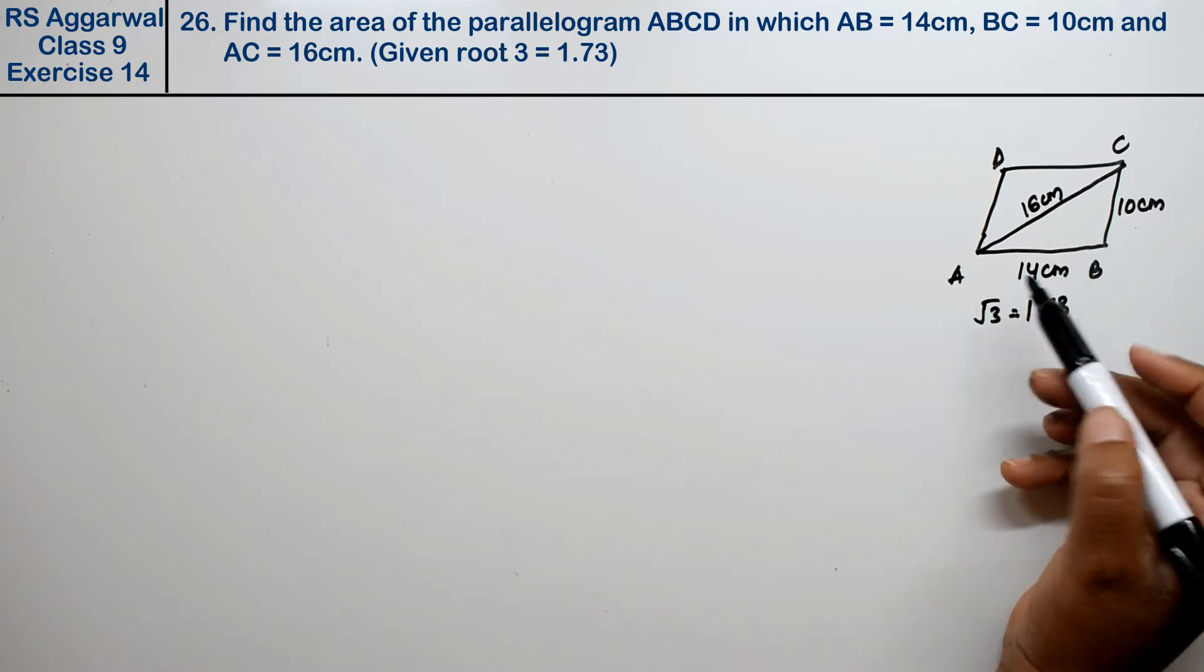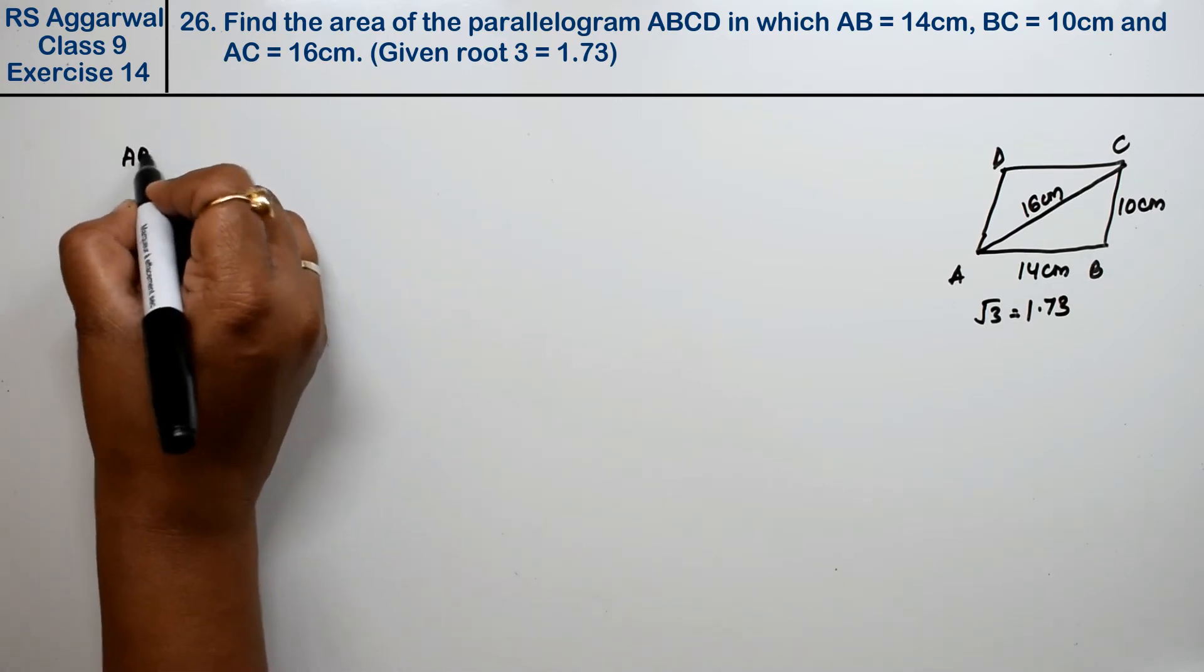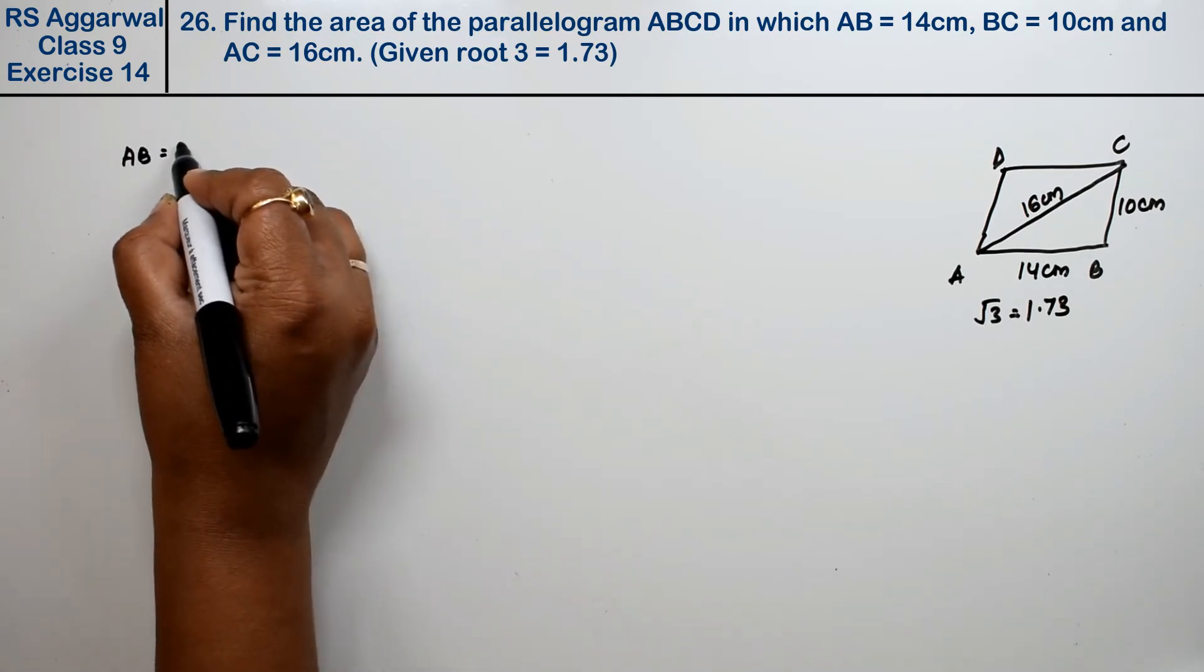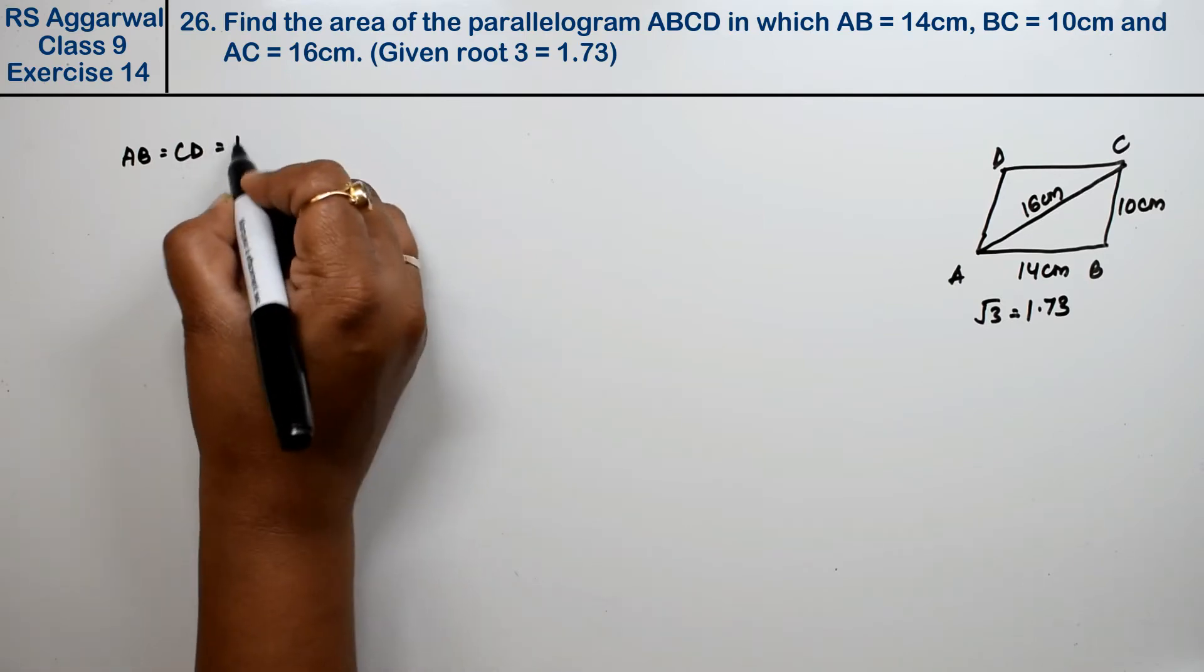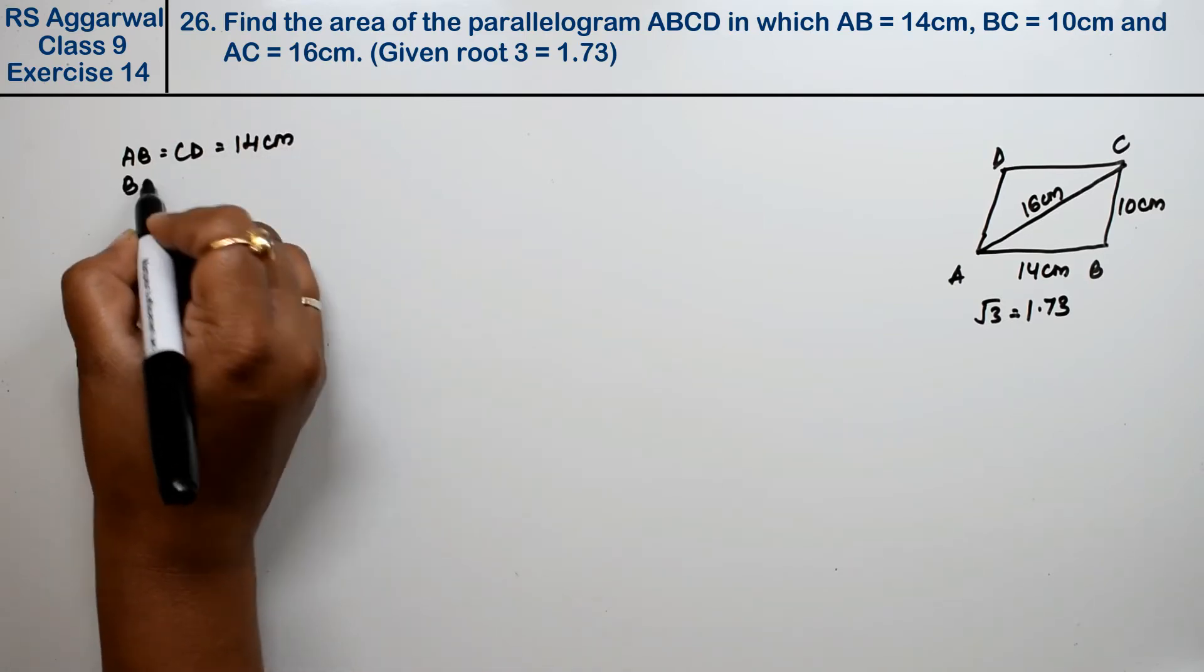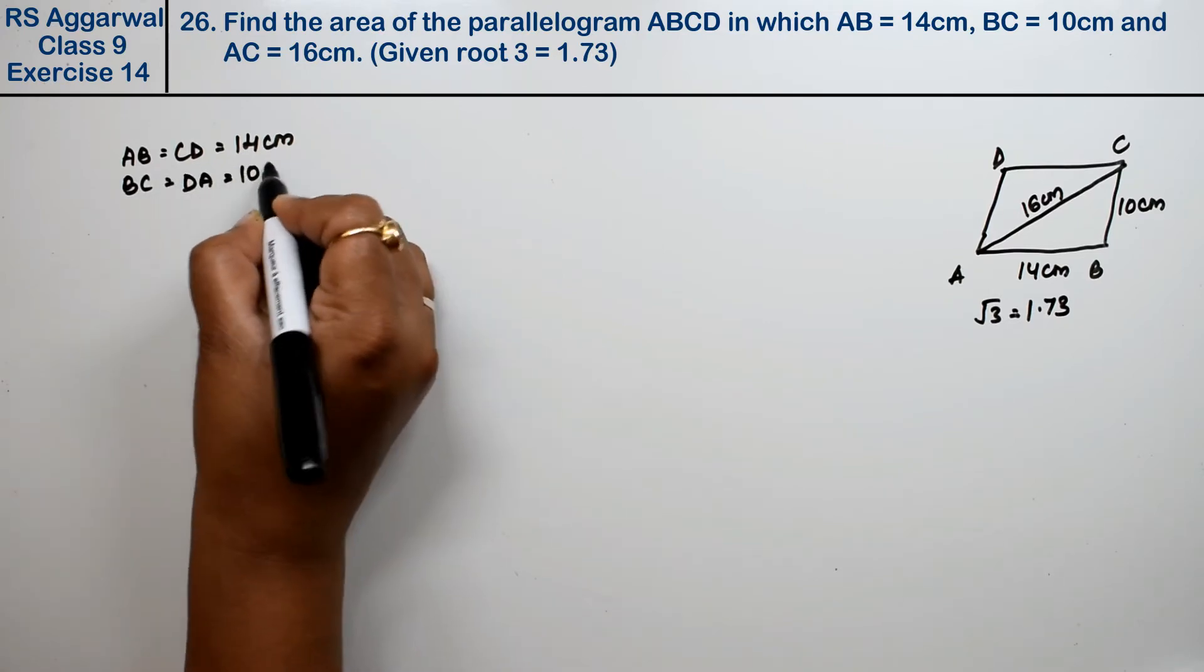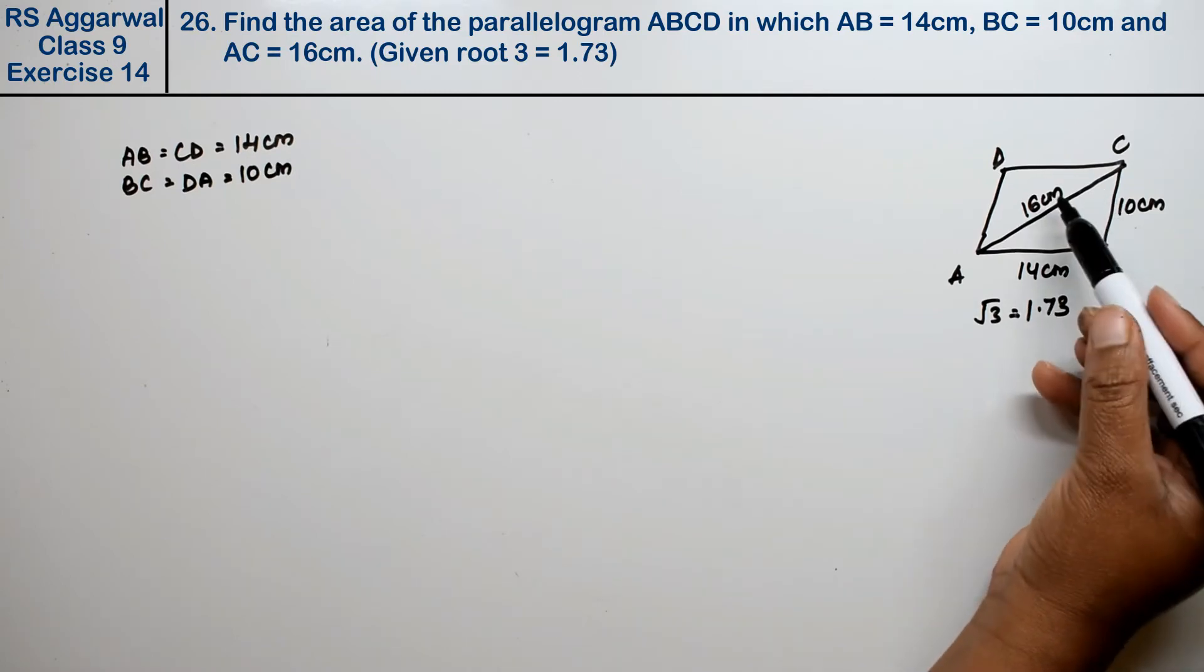Now this is a parallelogram, so we know that the opposite sides are equal. AB equals to CD, that is 14 cm, and similarly BC equals to DA, that is 10 cm. Right, so these three sides are equal.